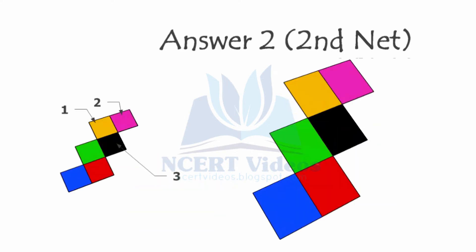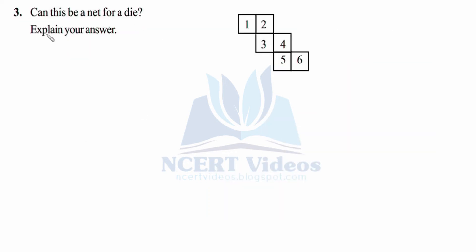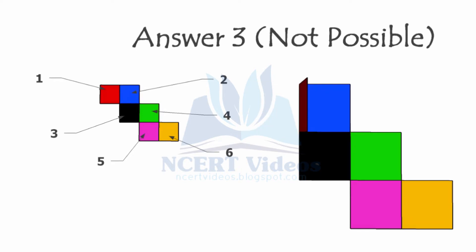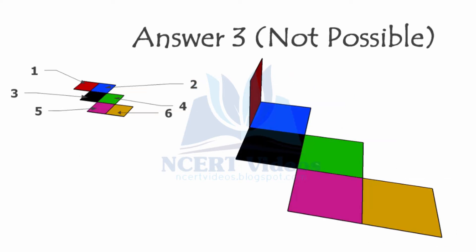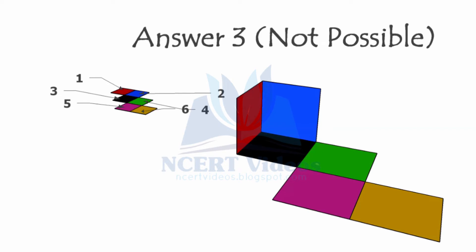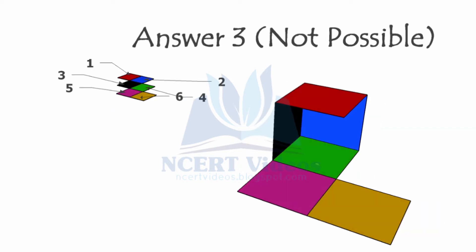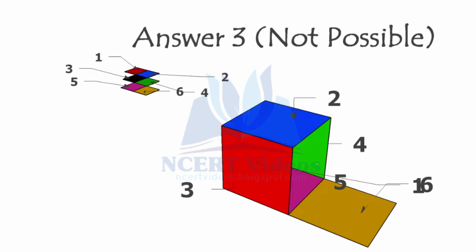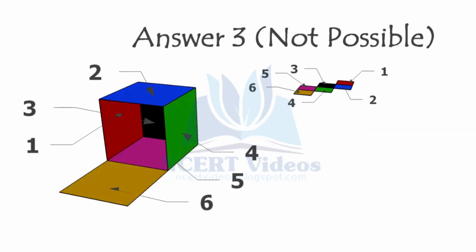Question three: can this be a net for a die? Explain your answer. Once again we have the same type of question but a different net. We rotate the red square as shown, then rotate the blue square, then rotate from the black square, then rotate from the green square - our cube is almost complete. We leave it open to show the background. Now we check opposite sides: yellow adds with black - black is three and yellow is six, so six plus three is nine. This does not equal seven, so it is not possible.